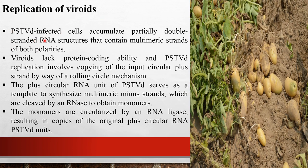Regarding replication, PSTVd-infected cells accumulate partially double-stranded RNA structures that contain multimeric strands of both polarity. The viroid lacks protein-coding ability. Replication involves the copying of the input circular plus strand by way of a rolling circle mechanism. The plus circular RNA unit serves as a template to synthesize multimeric minus strands, which are cleaved by RNases to obtain monomers. The monomers are then circularized by an RNA ligase, resulting in a copy of the original plus circular RNA.